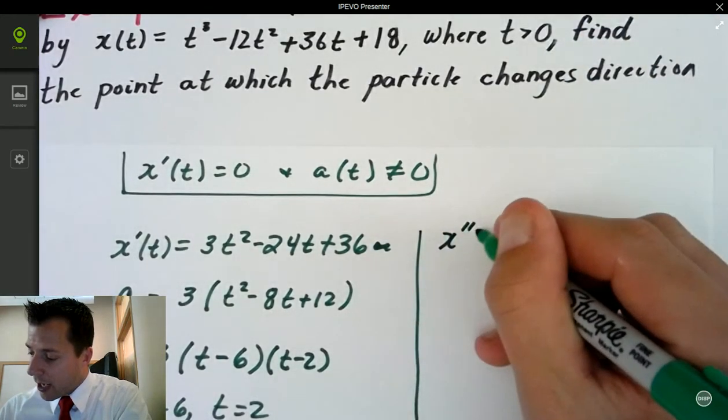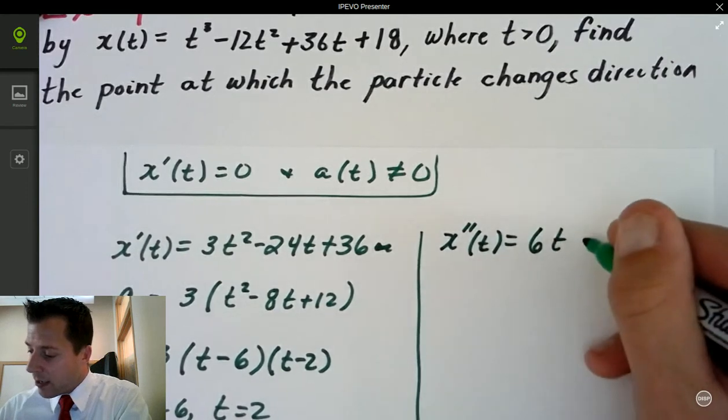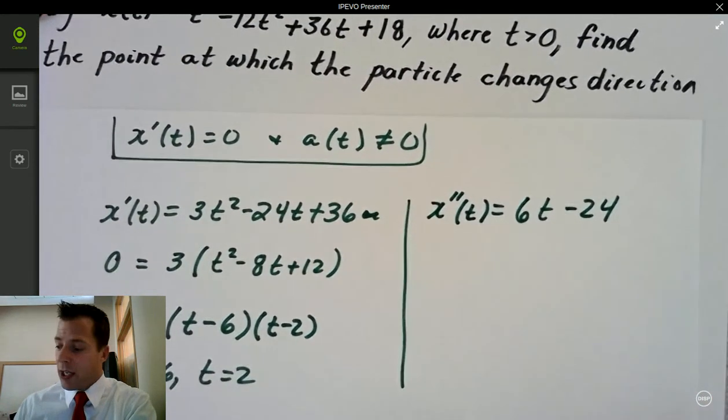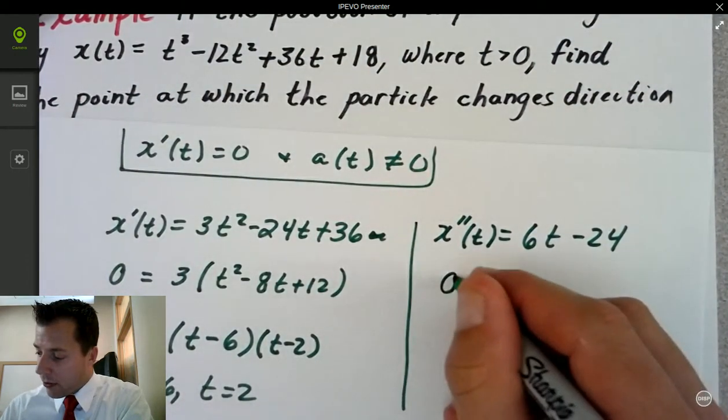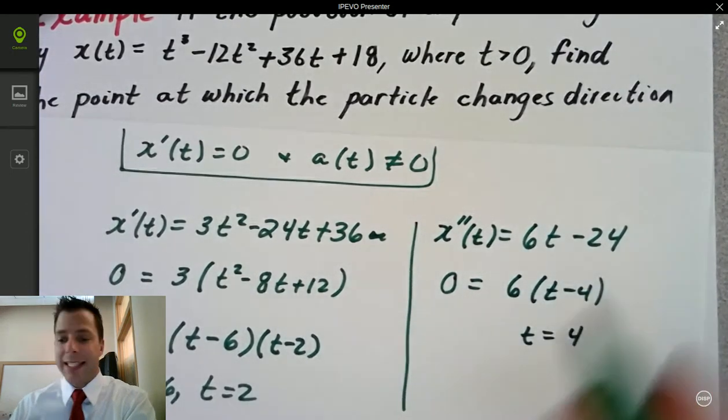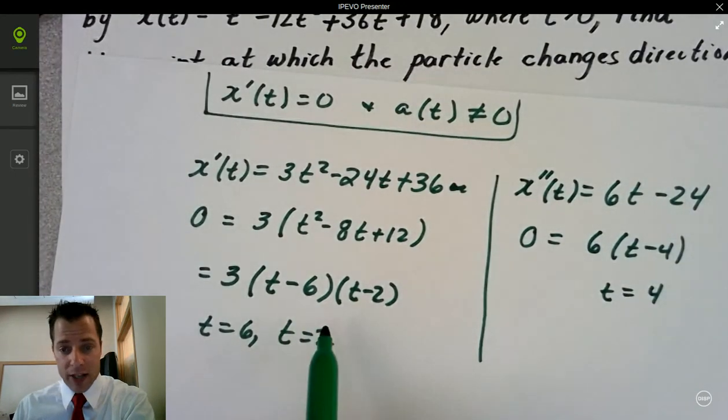I'm going to go ahead and draw a line here. x double prime of t is going to be equal to 6t minus 24. So what makes the acceleration equal to 0? Well, that's 4. Now, the acceleration is equal to 0 at 4, which is none of these two values.